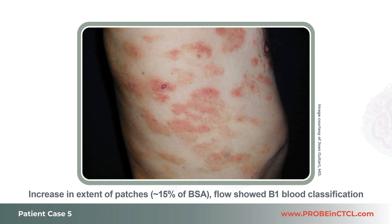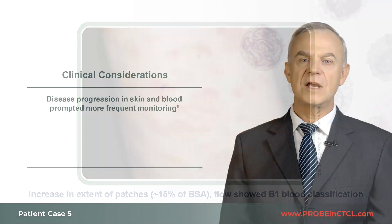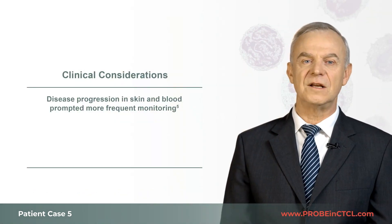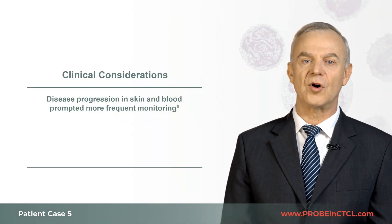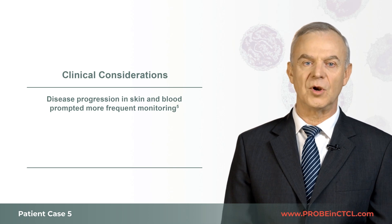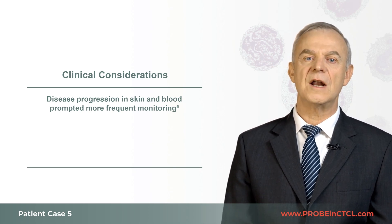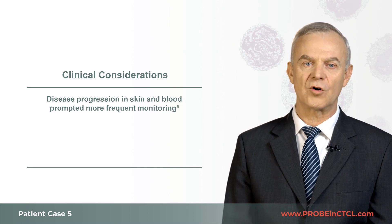On his most recent visit he presented with patches and plaques now covering approximately 15 percent of body surface area. Flow cytometry was repeated, which now showed the presence of blood involvement correlating with B1 classification, or low-level blood involvement. The increase in extent of affected skin along with the detection of an abnormal T-cell population in the blood cell phenotype signals a need to monitor this patient more closely.